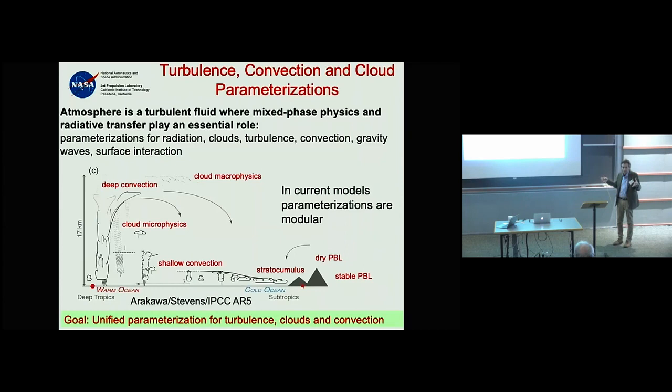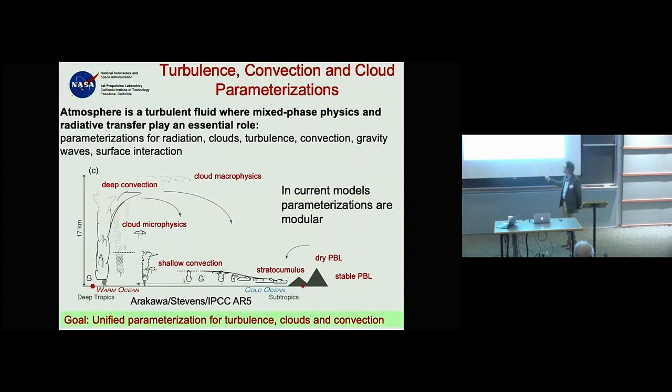We need to represent a variety of cloud-related processes. This is a nice figure inspired by an original from Arakawa, later modified by Bjorn Stevens, and now the official IPCC version. You can think of it as a cross-section: the coast of California with stratocumulus offshore.